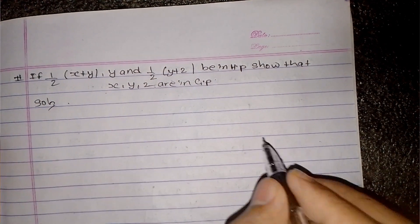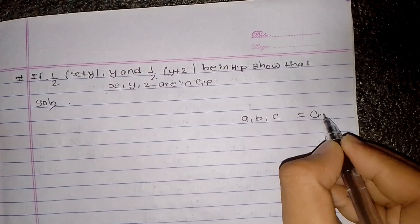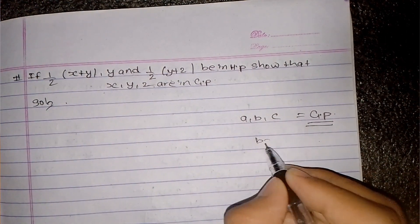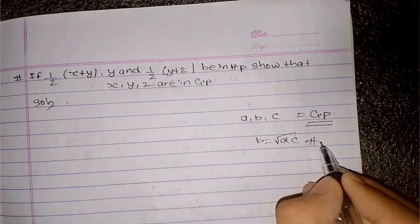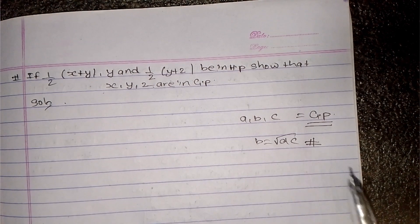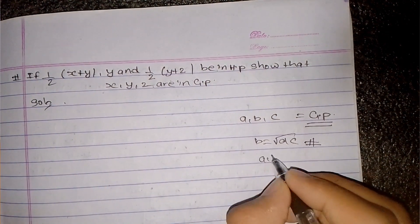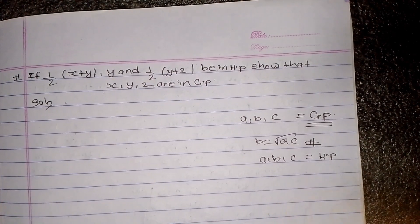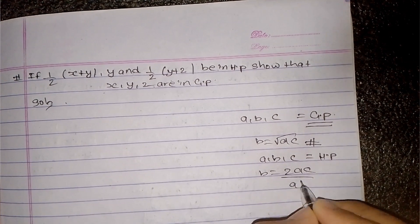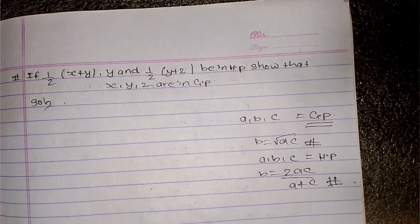Suppose the question is that a, b, c is a GP. If a, b, c are in GP, then b is the geometric mean of a and c, meaning b equals root of a times c. So b is root of a·c, and the condition is a, b, c in GP implies b equals root(ac), and b plus c.